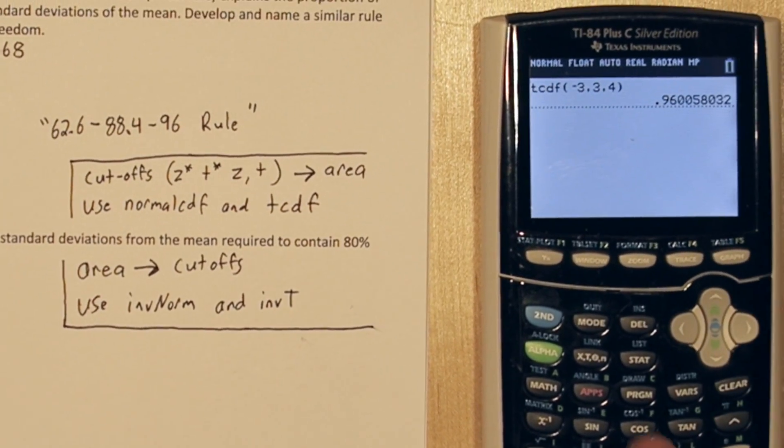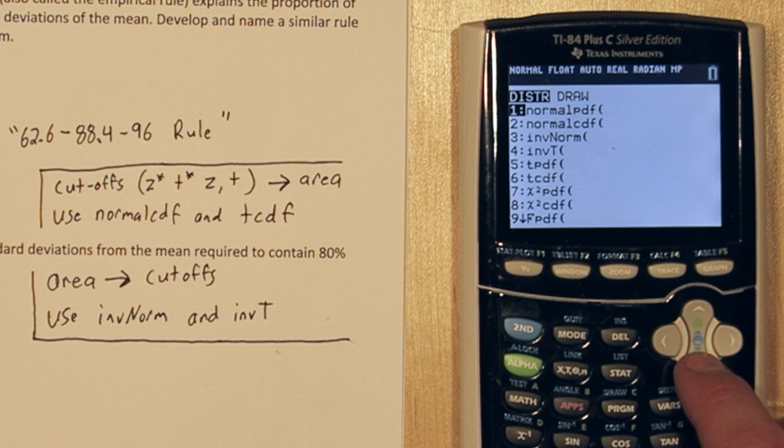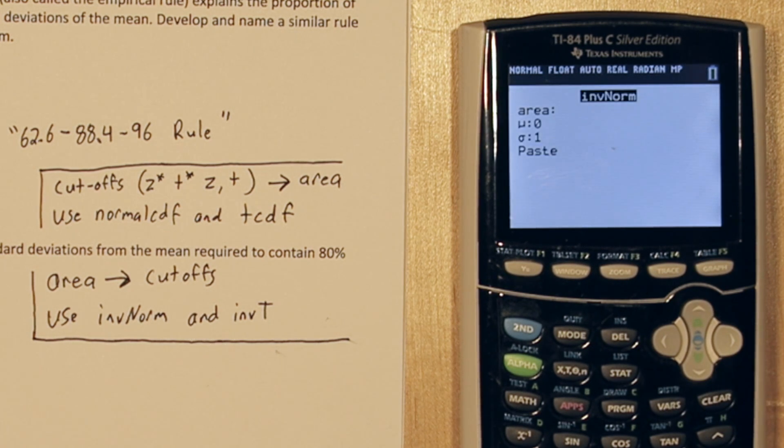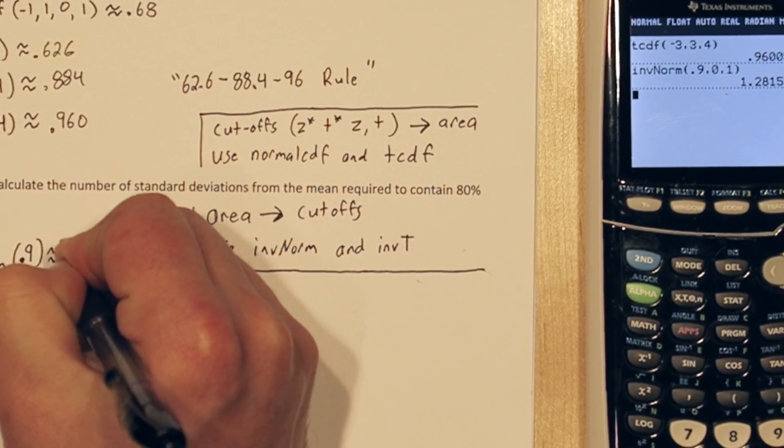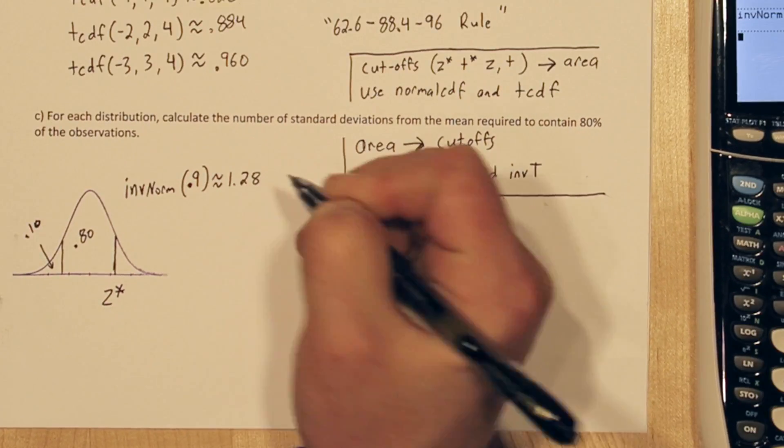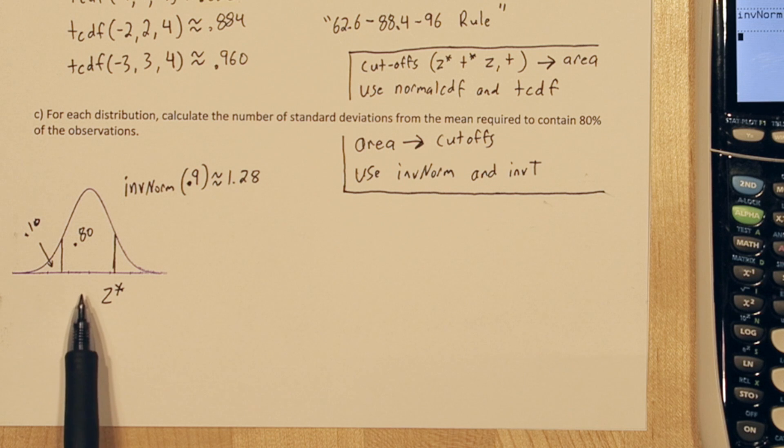To do this, press 2nd, vars, and go down to inverse norm. For area, put 0.9, and leave the mean and standard deviation as 0 and 1. So this tells us we have to go about 1.28 standard deviations from the center to cut off the middle 80% of the data.